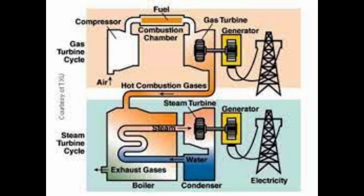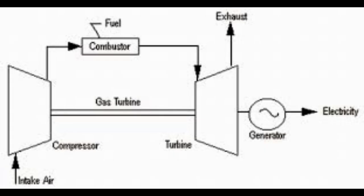Open cycle gas turbine: If the exhaust expands into the atmosphere, it is called an open cycle gas turbine, and the exhaust energy cannot be regained. 50 to 55% of the energy is wasted in the exhaust. A simple open cycle gas turbine plant consists of an air compressor, combustion chamber, and a gas turbine.